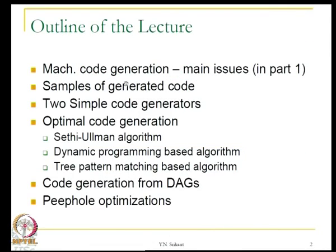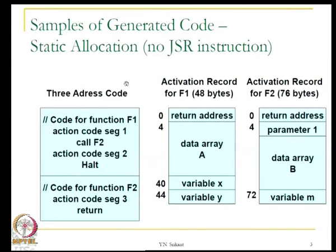Welcome to part 2 of machine code generation. In part 1 of the lecture we considered the main issues in machine code generation and I also gave you a sample of generated code. Today we will continue looking at the samples and other material. This is the sample code we saw last time: there is a function f1 which has action code segment 1, then a call to another function f2, another piece of code segment 2, and then halt. Function f2 has just a piece of code and then it returns. The activation record for both functions f1 and f2 are shown here.